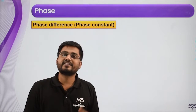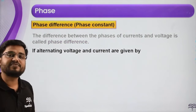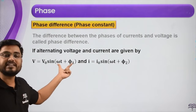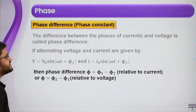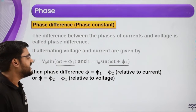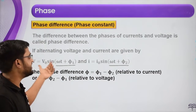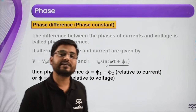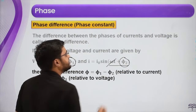The difference of two phases is called the phase difference. Phase difference is simply the difference between the two phases. For example, if voltage is V = V₀ sin(ωt + φ₁) and current is I = I₀ sin(ωt + φ₂), then the phase difference is φ₁ − φ₂ relative to current, or φ₂ − φ₁ relative to voltage. The ωt terms cancel out. It is important that when finding phase difference, the angular frequency of both quantities must be equal.